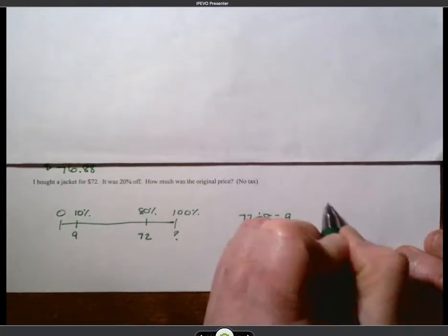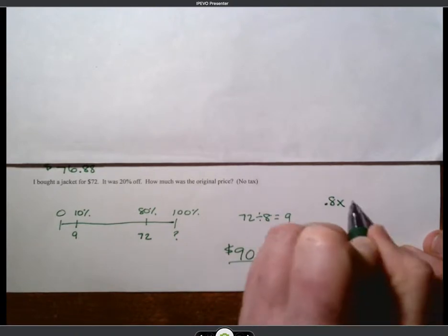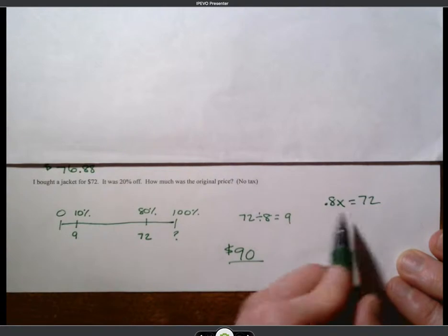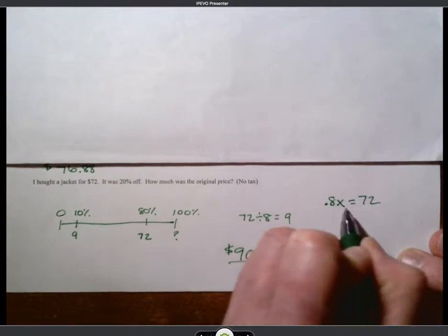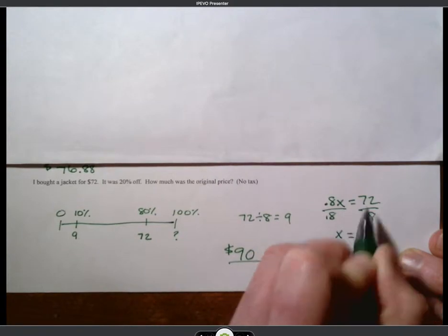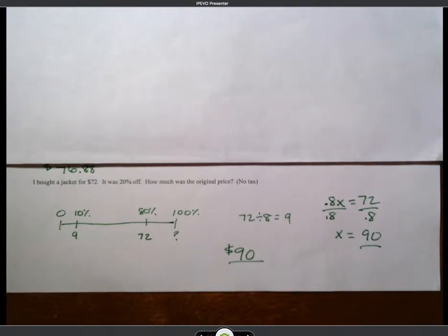The other way we could have done this is said 80% of the original price is $72. And then divided, and you end up with x is equal to 72 divided by 0.8, which is $90. Okay? There's always going to be multiple ways to do these problems.